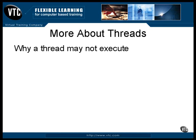A number of things could prevent a thread from being executed at any given time. It could be that the thread is set to a lower priority than other threads in the system. A number of threads could be running at the same priority and they're all taking turns. One thread is always halted while another is running, and if there are lots of threads running, any one of them could appear to be very slow. A call could have been made to the sleep method.